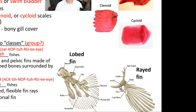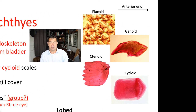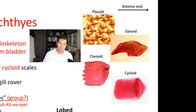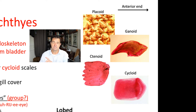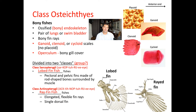Unlike sharks, bony fish don't have placoid scales, but they may have either ganoid, cycloid, or ctenoid scales. These scale names are based on shape and chemical structure — that's how they come up with the names.